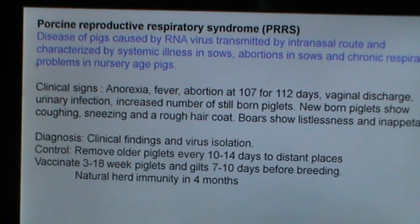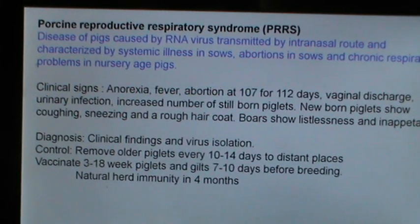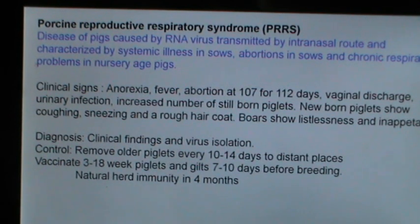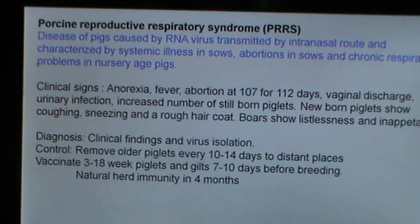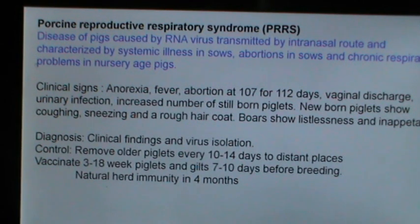Porcine Reproductive and Respiratory Syndrome (PRRS) is caused by an RNA virus transmitted by the intranasal route, characterized by systemic illness in sows, abortion, and chronic respiratory problems in nursery-age pigs. Clinical signs include anorexia, fever, abortion at 107 to 112 days, vaginal discharge, urinary infection, and increased stillborn piglets. Newborn piglets show coughing, sneezing, and a rough hair coat; boars show listlessness and inappetence. Diagnosis is through clinical findings and virus isolation. For control, remove older piglets every 10 to 14 days, vaccinate piglets at 8 to 18 weeks and gilts 7 to 10 days before breeding. Natural herd immunity is attained in 4 months.